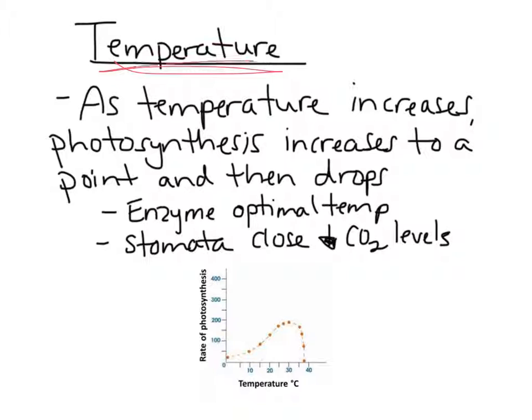And then temperature, sometimes we don't think about that, but temperature does play a role. As temperature increases, the photosynthesis will increase to a point, and then it will drop off as the enzymes are no longer reaching their optimum point. And then the stomatas are going to close, which will then cause the CO2 levels to drop.